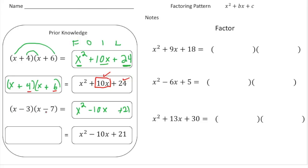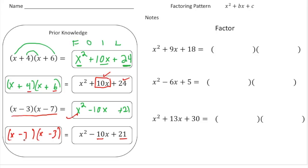Let's try this one: x minus 3 times x minus 7 — I want to get the factored form from the trinomial. Let's write our parentheses. Because we start with x squared, it's going to be an x and an x. Now I have to say, what times what gives us 21, but adds up to negative 10? That would be negative 7 and negative 3, because negative 7 times negative 3 gives us positive 21, and negative 7 plus negative 3 gives us a sum of negative 10.